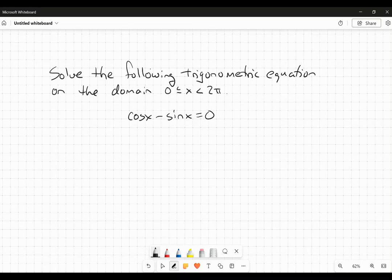Okay, hi everybody. So in this video here, we're going to solve the following trigonometric equation on the domain 0 to 2π. And the equation is cos(x) - sin(x) = 0.